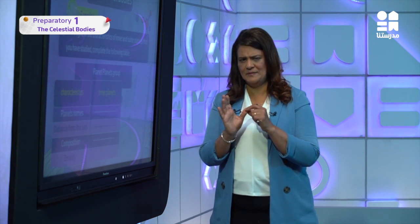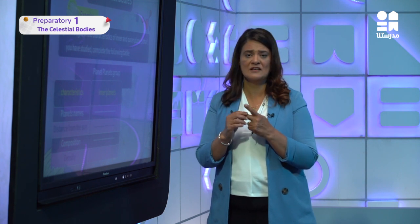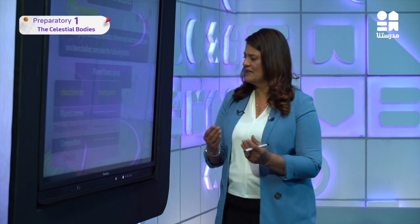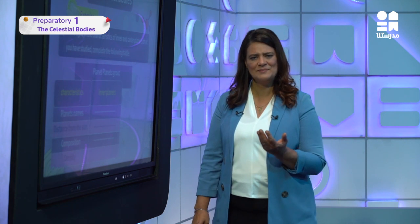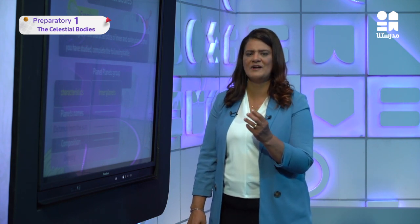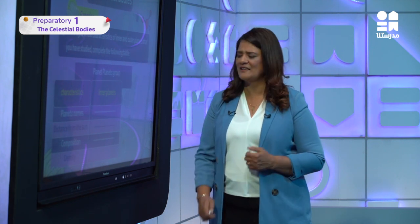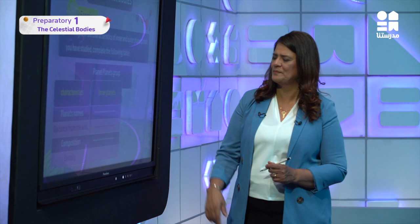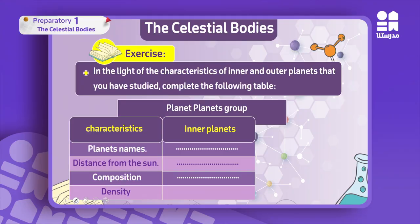We divide the planets into inner planets and outer planets. We take the first four planets and call them inner planets. They are separated from the other four planets by a certain belt called the asteroid belt. The asteroids are small rocks separating the inner planets from the outer planets. The inner four planets are Mercury, Venus, Earth, and Mars.